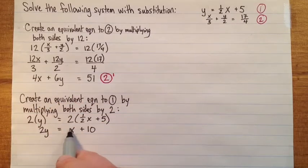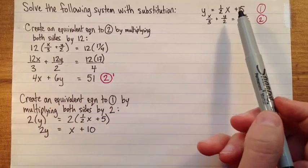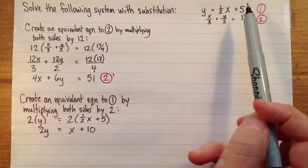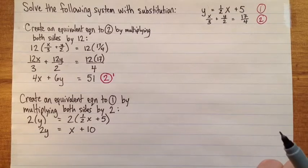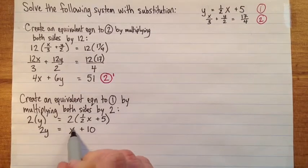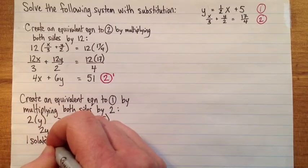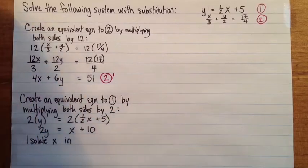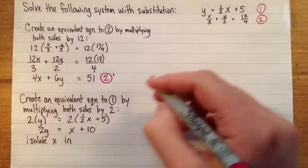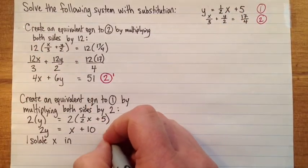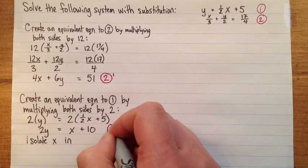And then right away I'm going to isolate. I want to solve this system with substitution. If we think back to what our original goal is. So I want to isolate one of the variables. And x right here is a perfectly good one to do. So isolate x in, I better give this a name. This was equation 1 but multiplied by 2 so I'll call it 1 prime.